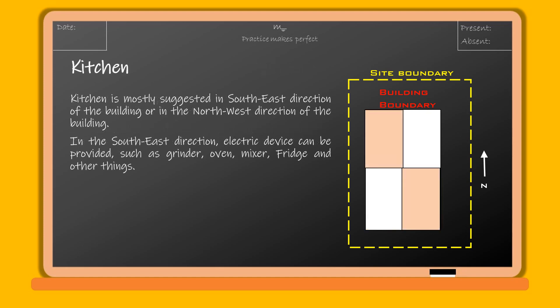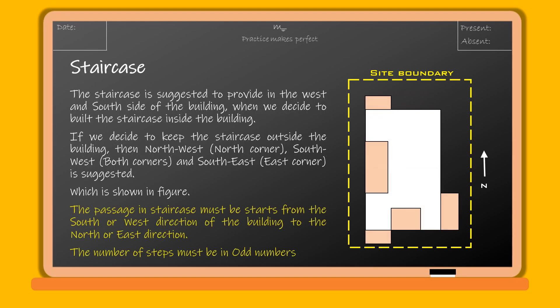The kitchen is mostly suggested in the southeast direction of the building or in the northwest direction. In the southeast direction, electric devices such as a grinder, oven, mixer, fridge, and other appliances can be provided.